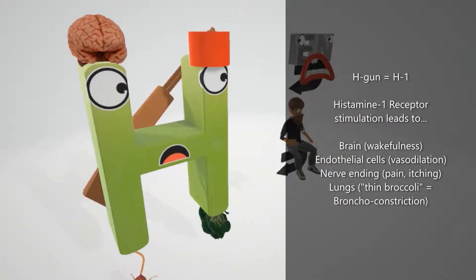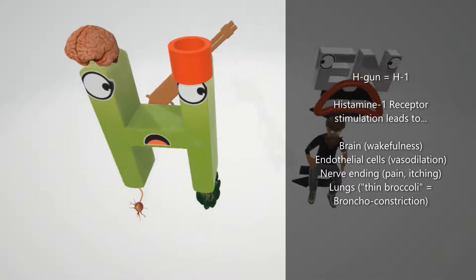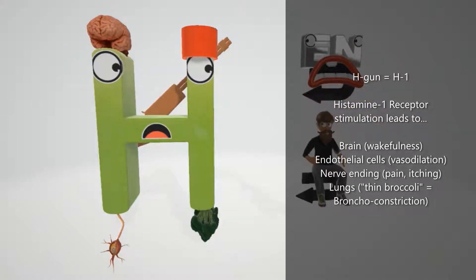You see the brain on top. There are H1 receptors in the brain, and when they're activated it will lead to things like wakefulness. We see this dilated vessel over here, the vasodilation. When H1 receptors are stimulated on the endothelial cells, it causes vasodilation.